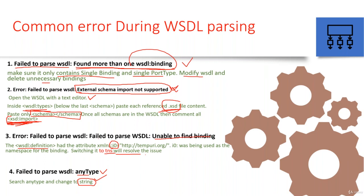So these are the common issues I have listed. Like these, you may get different kinds of issues and each may have a different approach, but these are the very common issues which everybody usually faces when converting WSDL to Apex. Thank you. Stay tuned for the next session.